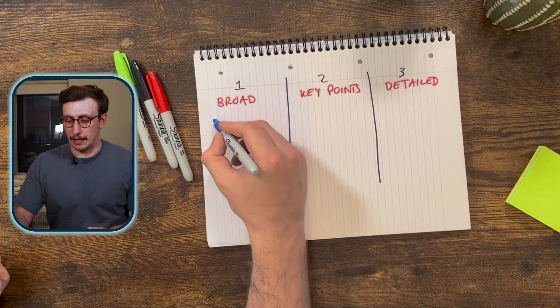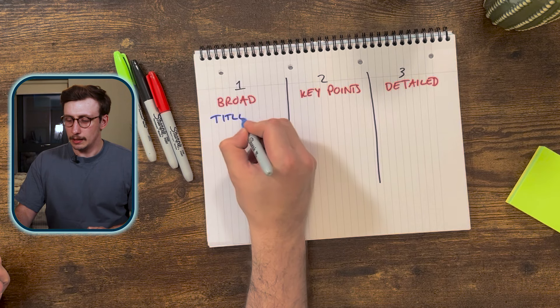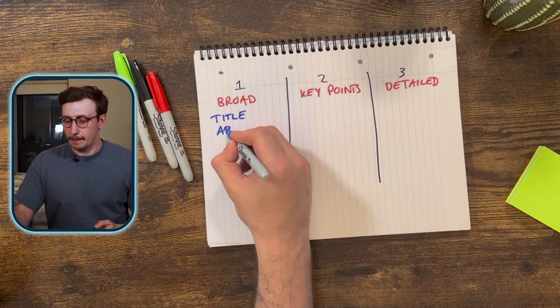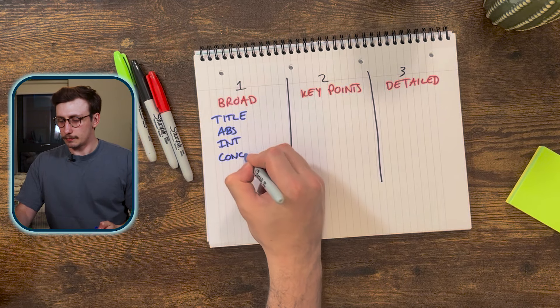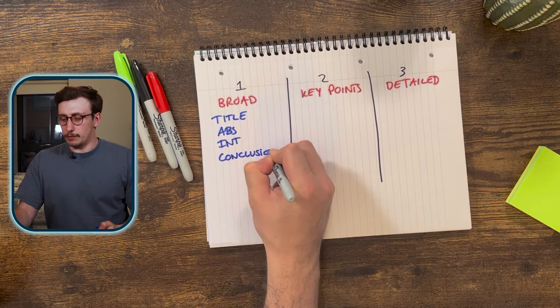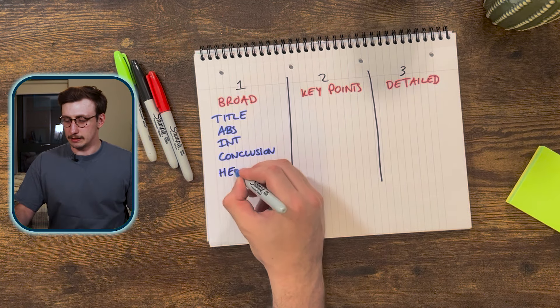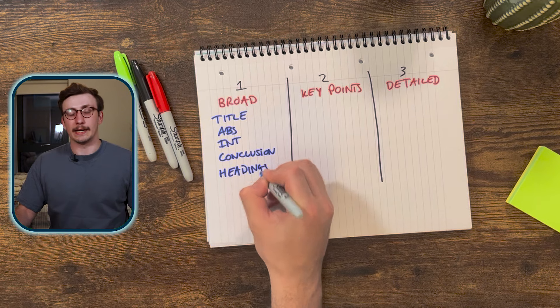Pass number one should only take about five to ten minutes. In this pass, you look at the title, abstract, introduction, and conclusion, as well as the headings and subtitles — just to get a very broad understanding of what the paper contains. This should give you enough to decide whether to continue to the second pass.